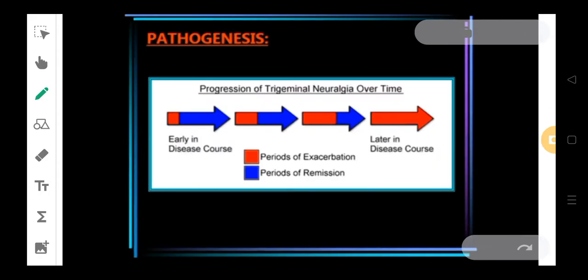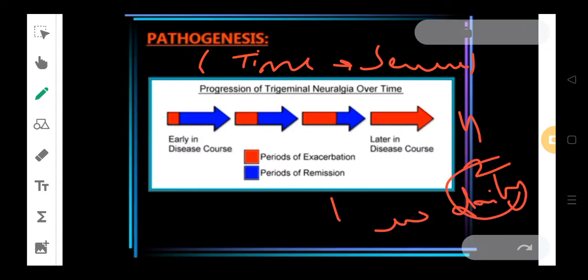Coming to the pathogenesis, what you need to know here is that with time, the condition is going to get severe. In the beginning, maybe the episodes of attack were occurring every 4 months. Then it started to occur in the gap of 2 months, then 1 month, then in few weeks, and then maybe on daily basis the patient is facing the attacks which is an extremely severe condition.